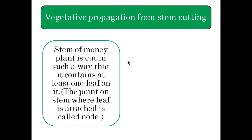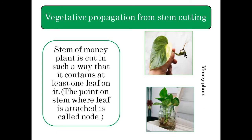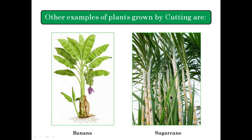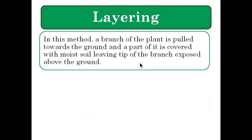Another example of vegetative propagation from stem cutting is the money plant. A cutting of the stem is taken such that it contains at least one leaf. The point where the leaf is attached to the stem is known as a node. When we dip this portion in a container filled with water, after few days roots start developing and it grows into a complete money plant. Other examples include banana and sugarcane.